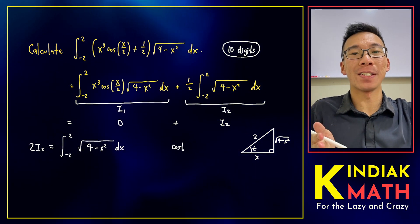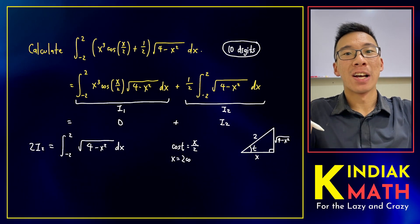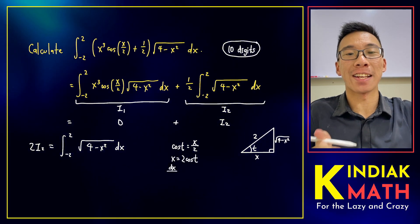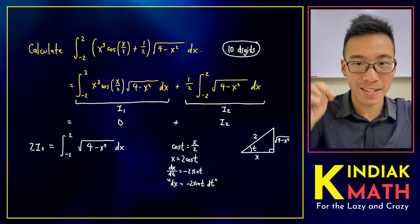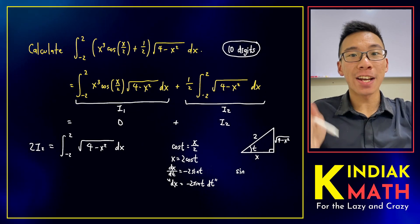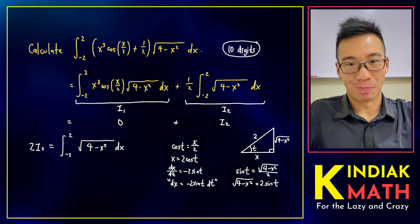Firstly, the cosine of t is x over 2. We can do a bit of algebra and then differentiate to get dx equals to negative of 2 sine t dt. And secondly, the sine of t is square root of all of that divided by 2.